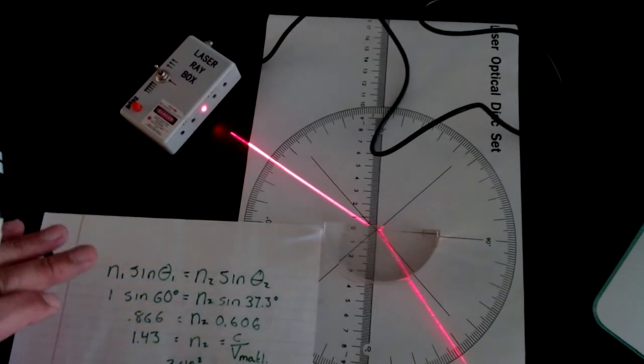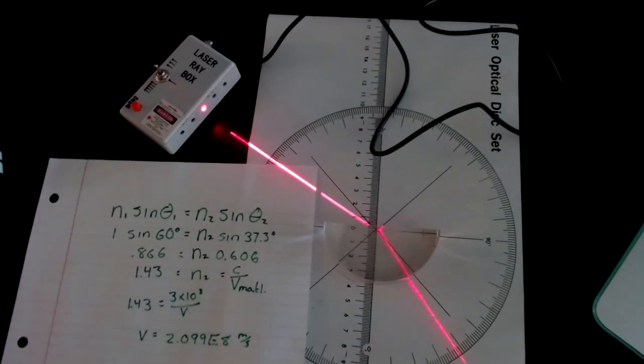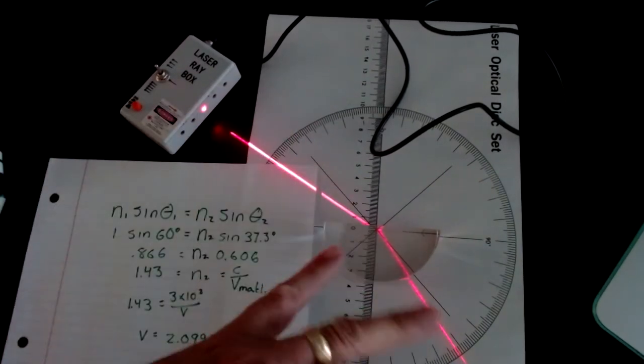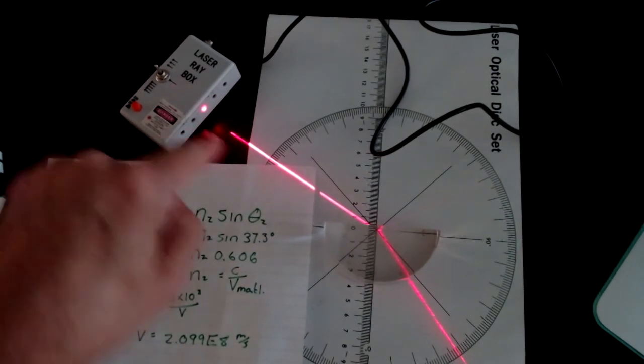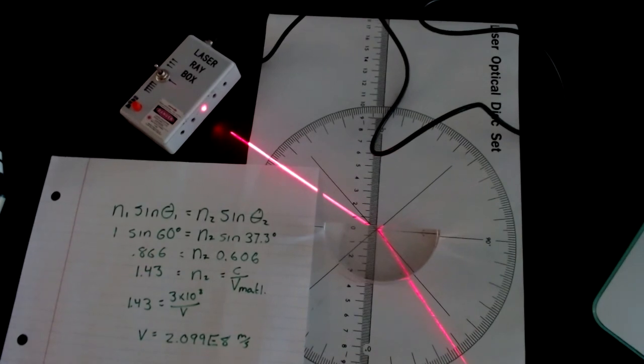So there's Snell's law. I'm sorry, I left that off the bottom. There's Snell's law in two ways. One is given the angles, find the material. The other is given the material and n1 and n2, find the angles.